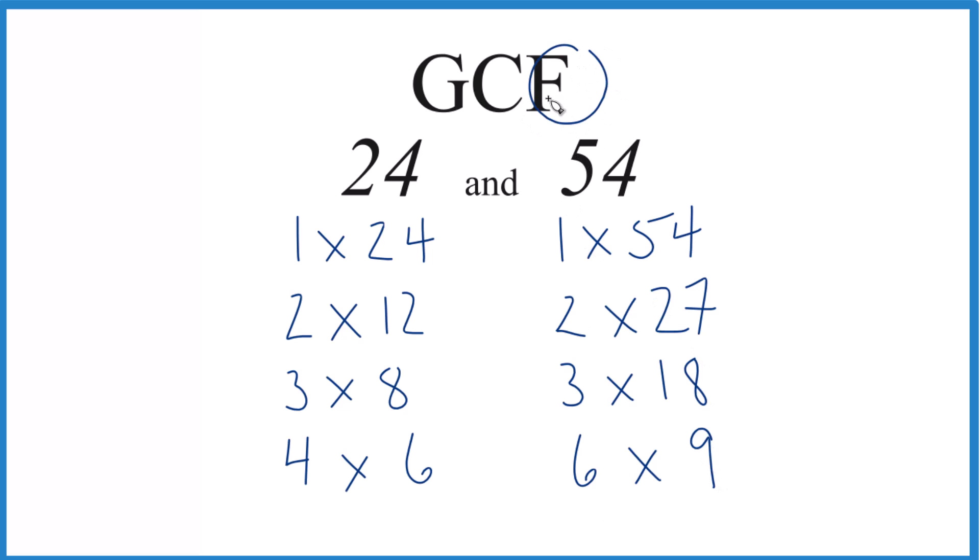So we have all of our factors. Now we're going to look at the common factors and then choose the greatest one. So 1, that goes into 24 and 54 evenly. 2, yeah.